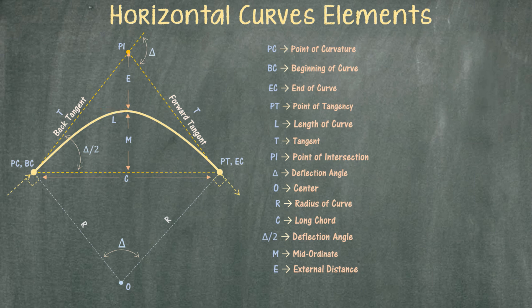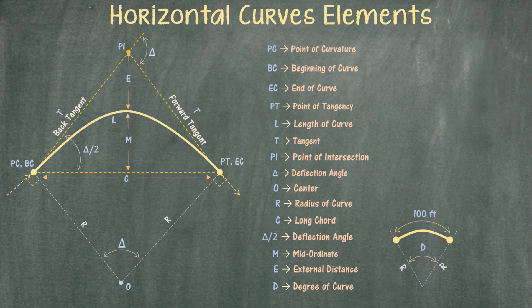The degree of curve is the angle formed between the radius lines for a curved segment of one hundred feet. That covers the main elements on the horizontal curve. Now I'm going to go over the most used equations for the FE exam and the California specific exam.